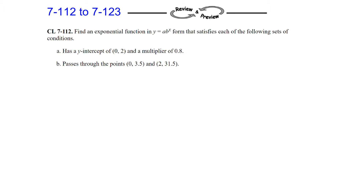We'll start with question A. It has a y-intercept of (0, 2), which tells us the initial value starts at 2, and a multiplier of 0.8. So we can write y equals 2 times 0.8 raised to the x power.